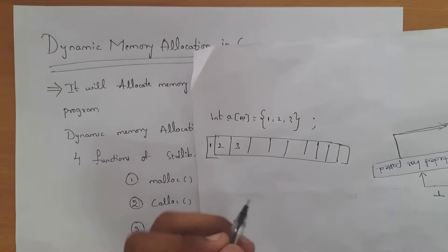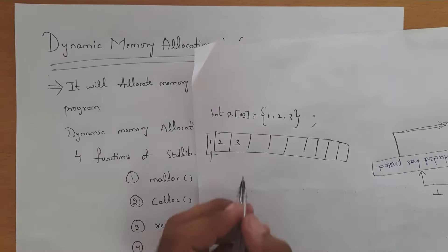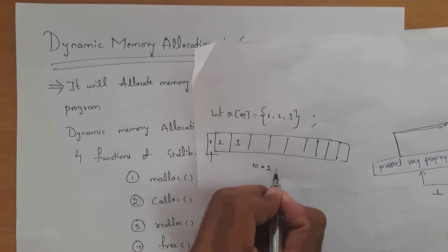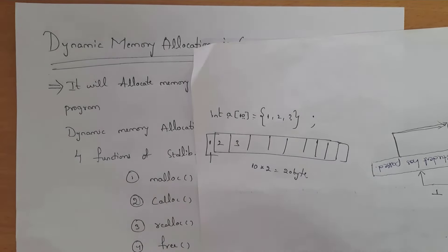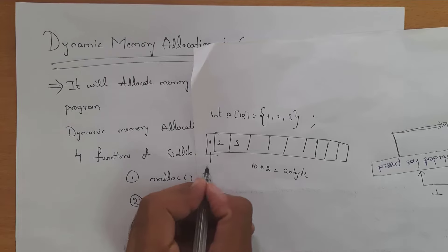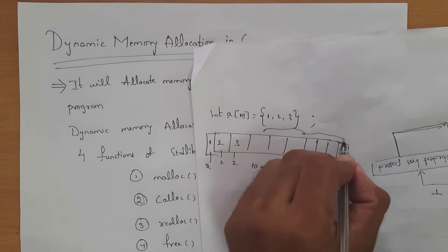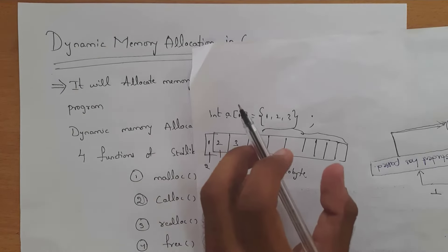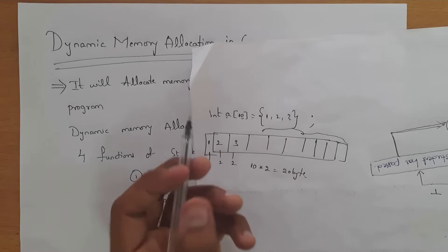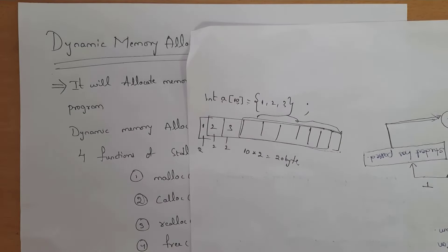As we know, integer will occupy two bytes of memory. So here I given size as 10, it will occupy 10 into 2, that is 20 bytes of memory. But I given only three values, so these three will occupy two bytes each, and all the remaining memory is wasted. Though I given size as 10, I initialized only three values, so all the remaining memory is wasted.